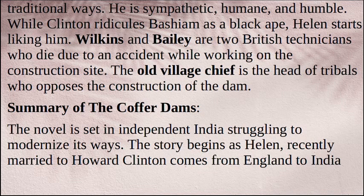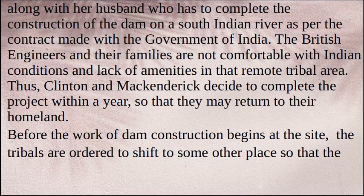Summary of The Coffer Dams. The novel is set in independent India struggling to modernize its ways. The story begins as Helen, recently married to Howard Clinton, comes from England to India along with her husband who has to complete the construction of the dam on a South Indian river as per the contract made with the government of India. The British engineers and their families are not comfortable with Indian conditions and lack of amenities in that remote tribal area. Thus, Clinton and McHendrick decide to complete the project within a year so that they may return to their homeland.